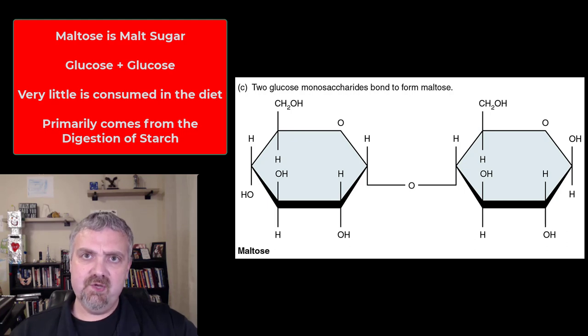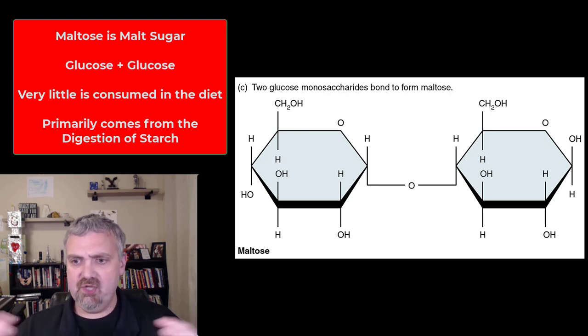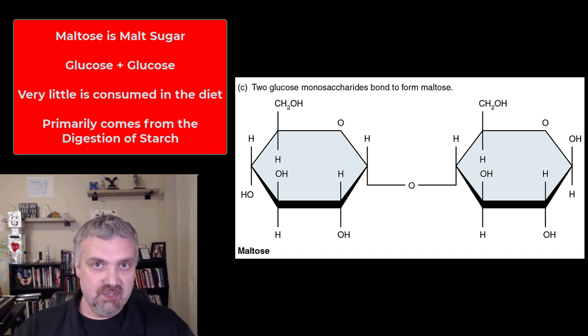But the huge majority of maltose that you're going to have inside your body is going to come from consuming the polysaccharides like starch. So as your body takes this huge starch molecule, which can be hundreds or thousands of glucose units long and breaks them down into smaller chunks, at some point you'll get down to maltose, which is a glucose bonded to a second glucose. Then you'll use the enzyme maltase to break them apart into individual glucoses. And that's what will be absorbed and used in your body.